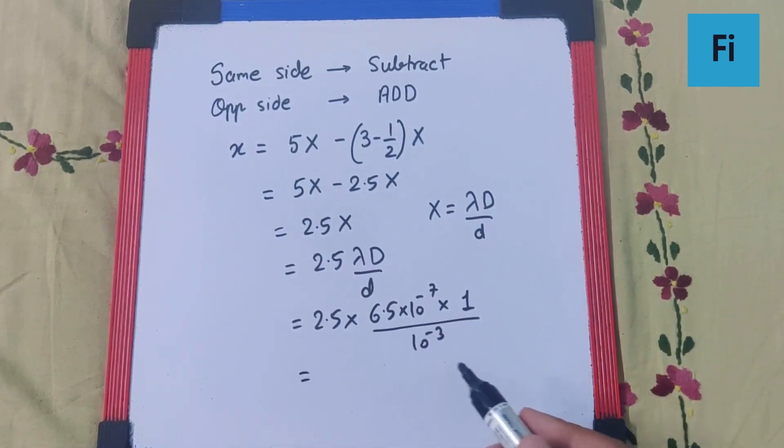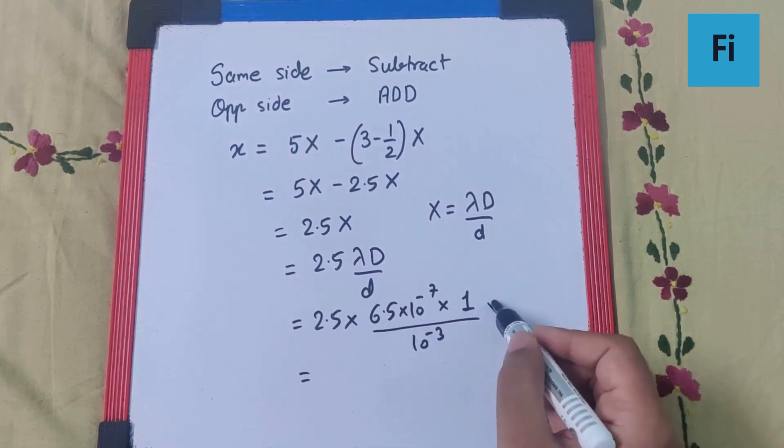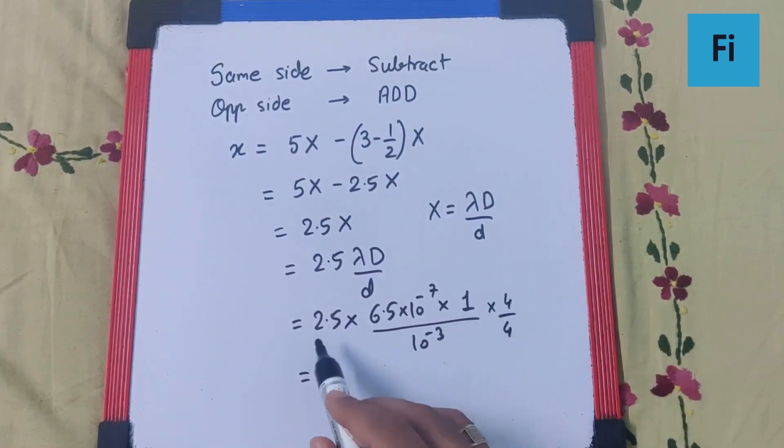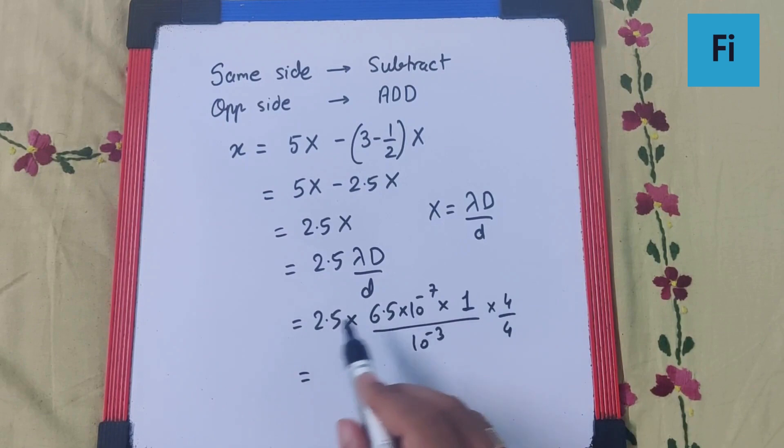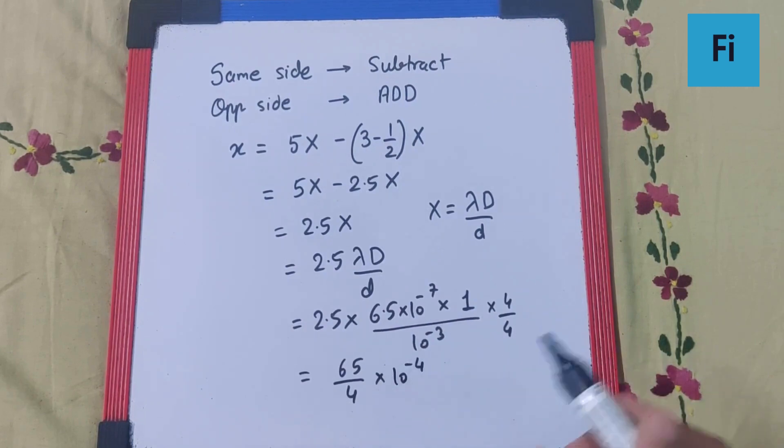just have to do the calculation here. If I multiply and divide by 4, then 2.5 into 4 becomes 10, so 10 into 6.5 becomes 65 divided by 4 into 10^-4.